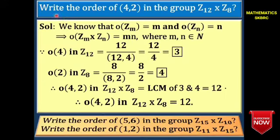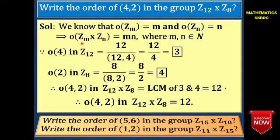Another example: Write the order of the element (4, 2) in the group Z₁₂ × Z₈. Z₁₂ is a group with 12 elements and Z₈ is a group with 8 elements. All elements in Z₁₂ × Z₈ are ordered pairs. Here 4 ∈ Z₁₂ and 2 ∈ Z₈. We know that Zₘ is a group with respect to addition modulo m, and the order of Zₘ × Zₙ is mn.